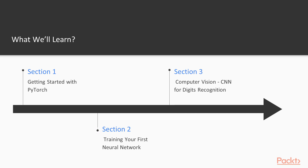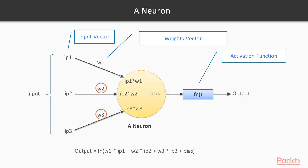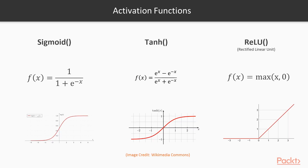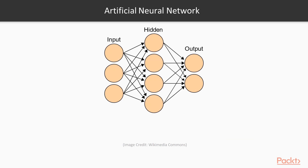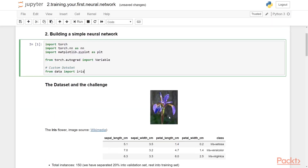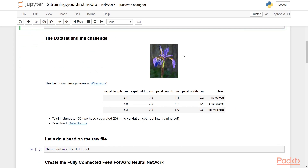Section 2 is titled Training Your First Neural Network. In this section, we proceed to create our first artificial neural network. We learn about neurons, about loss functions and optimizers, and we put them together into a neural network in PyTorch to classify species of a flower based on its attributes.